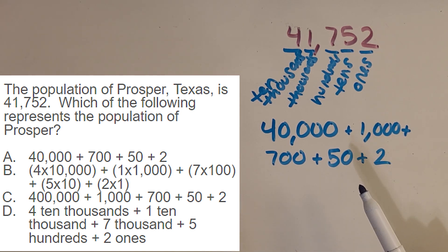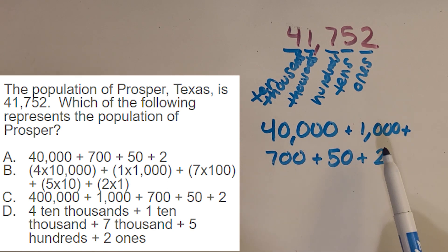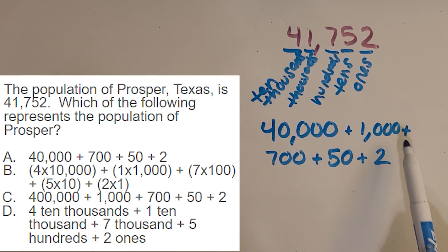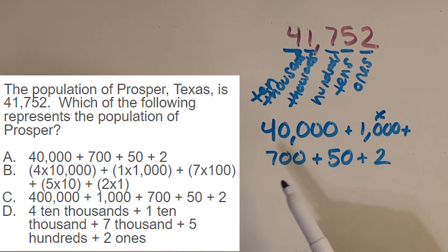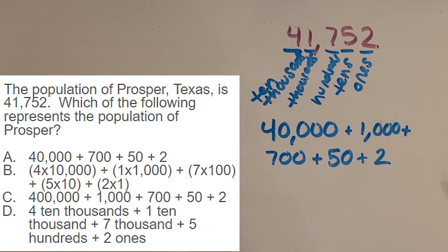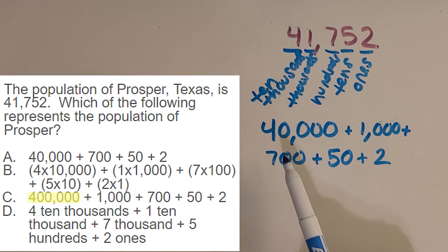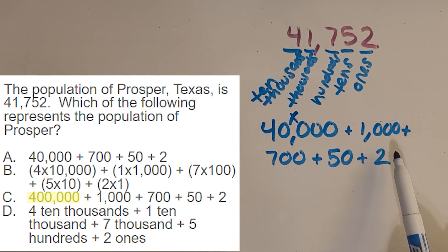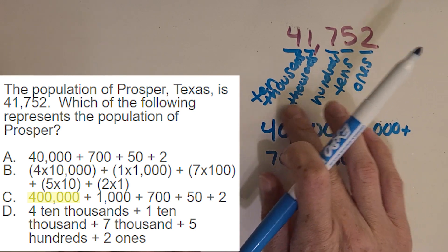Now let's look at our choices. Let's look at A — it has 40,000. Uh-oh, it's missing the 1,000, and then it has 750 and two. So it's really close — it looks like it was almost trying to trick us. Make sure we're really paying attention. So A, we can cross out. Now let's look at C. Does it have 40,000? Oh no, it has 400,000 — so that has the wrong amount for the four. The 1,000 matches and 752 looks right, but that very first number was wrong. So we have to cross out C also.